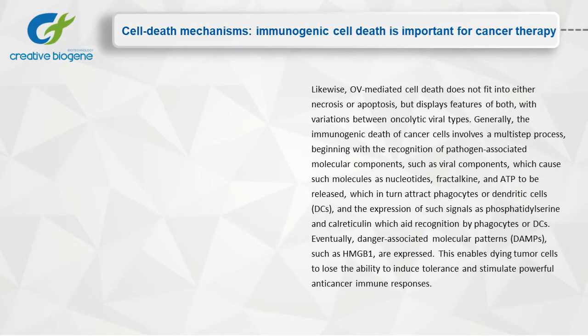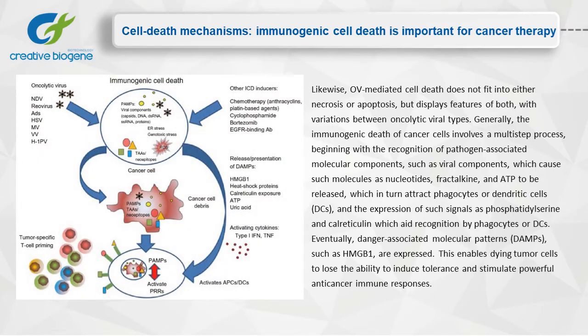Likewise, oncolytic virus-mediated cell death does not fit into either necrosis or apoptosis, but displays features of both, with variations between oncolytic viral types. Generally, the immunogenic death of cancer cells involves a multi-step process, beginning with the recognition of pathogen-associated molecular components such as viral components, which cause such molecules as nucleotides, calreticulin, and ATP to be released, which in turn attract phagocytes or dendritic cells, and the expression of such signals as phosphatidylserine and calreticulin which aid recognition by phagocytes or dendritic cells.